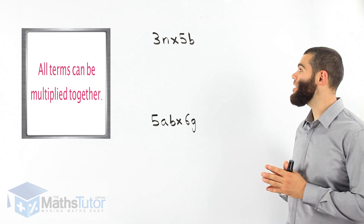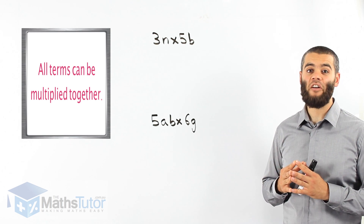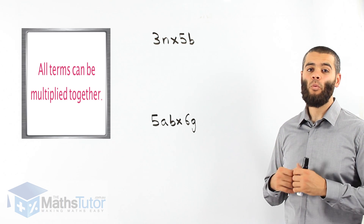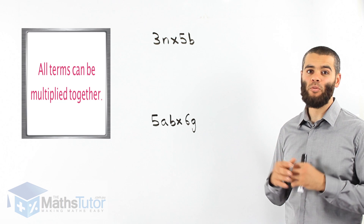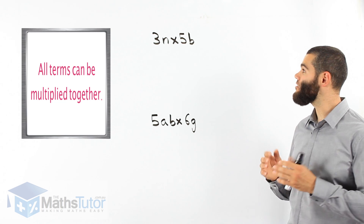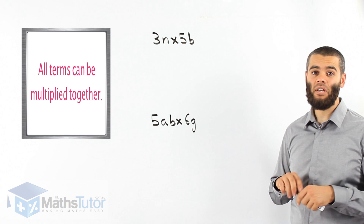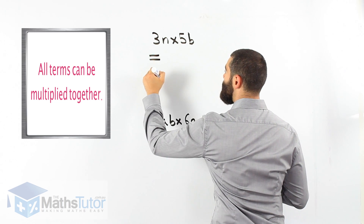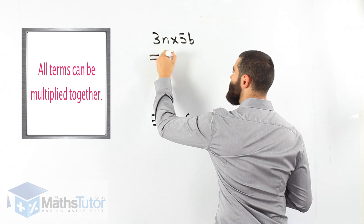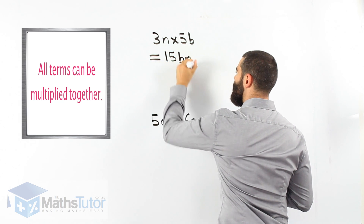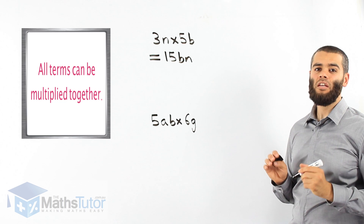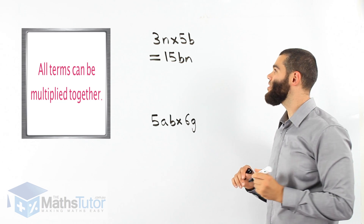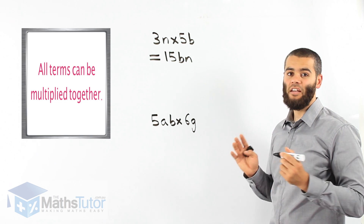Here we have 3n times 5b. Again, we don't worry about like terms with multiplication — it doesn't matter. So 3n times 5b: we know our times tables, 3 times 5 is 15. We put the pronumerals in alphabetical order, so our answer is 15bn. It's that easy.